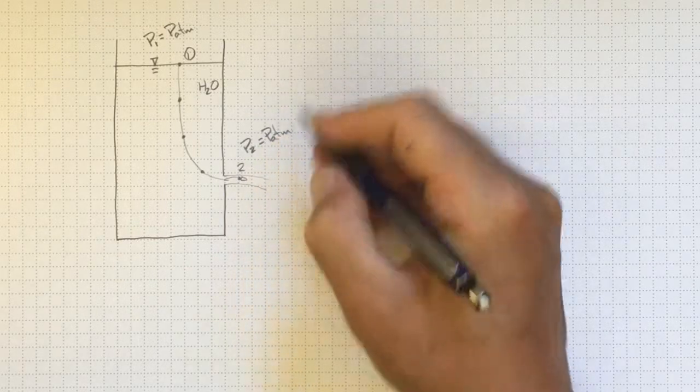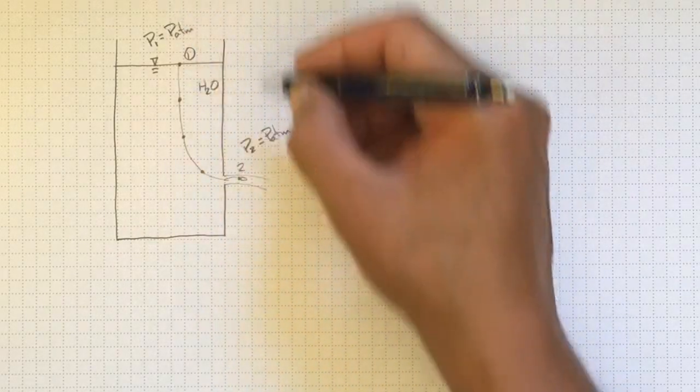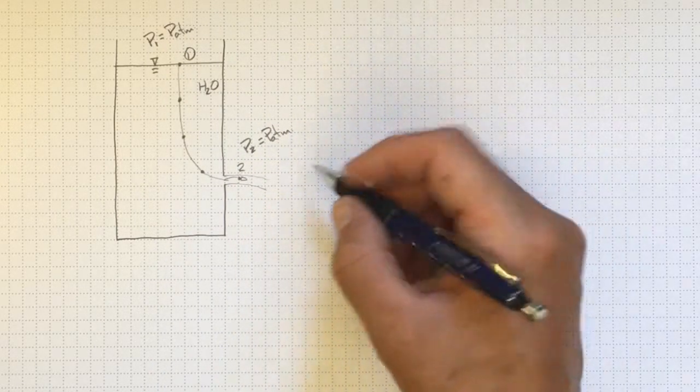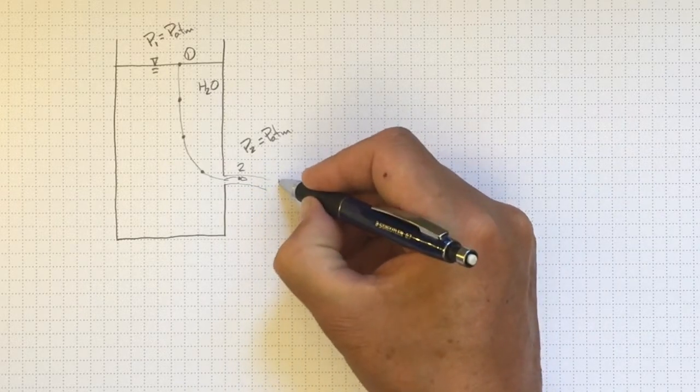So we're at atmospheric pressure. And if this elevation isn't too different, then the atmospheric pressure won't be very different because it's air. So there's not going to be a large change in pressure.